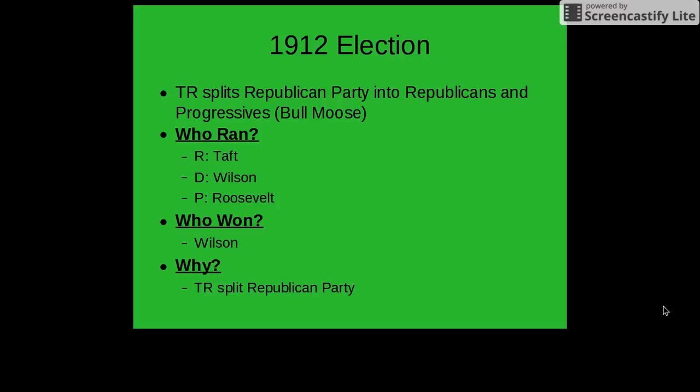This set up a three-tiered election where we have Taft, Wilson, and Roosevelt. Because Teddy Roosevelt split the Republican votes, Wilson was able to win the election in 1912.